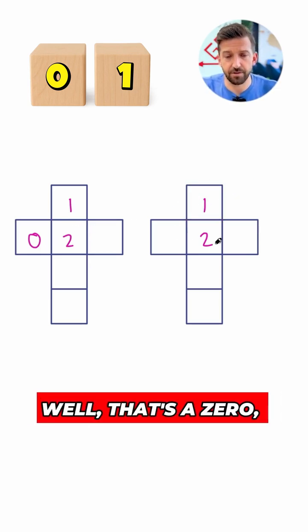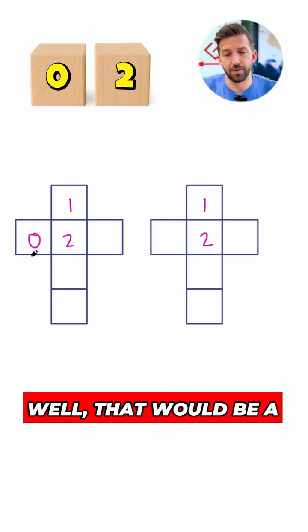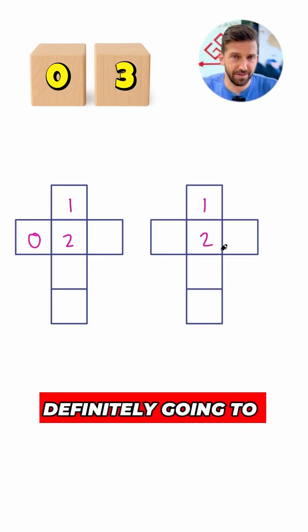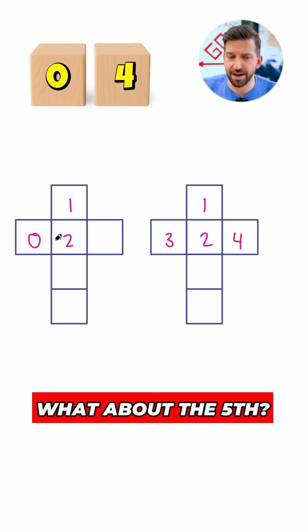What about the second? Well, that's a zero, then a two. So I'm covered there as well. What about the third? Well, that would be a zero, then a three. So I'm definitely going to need a three over here. Well, what about the fourth? A zero, then a four.